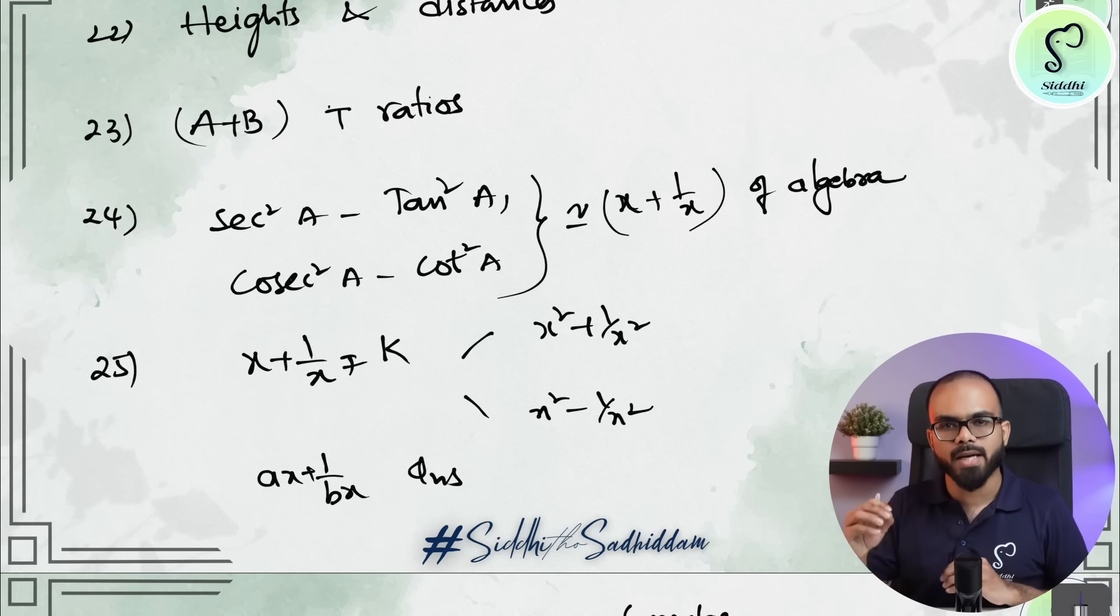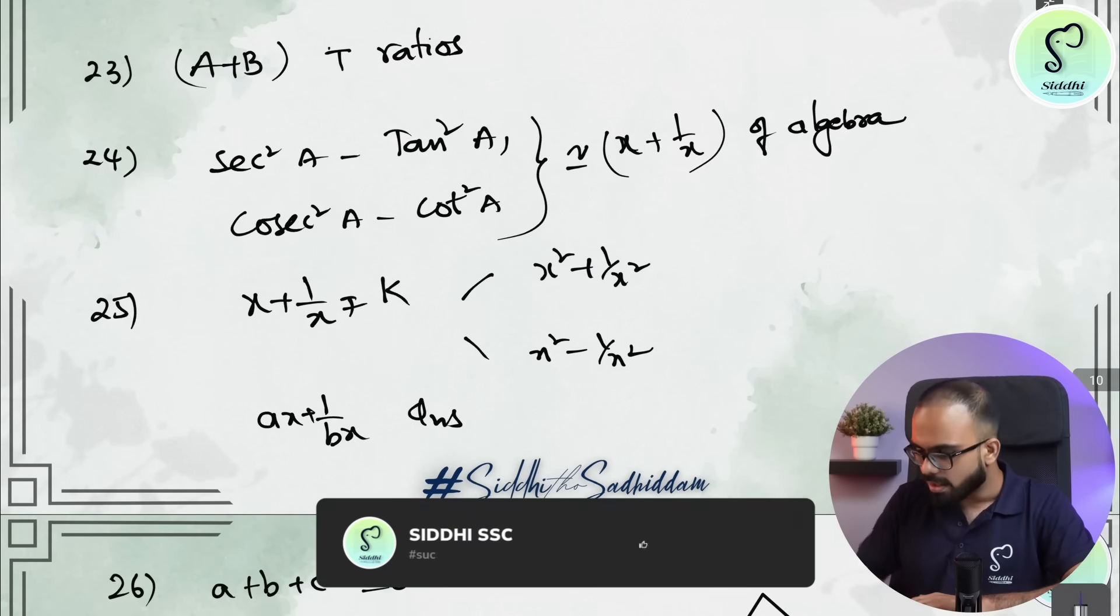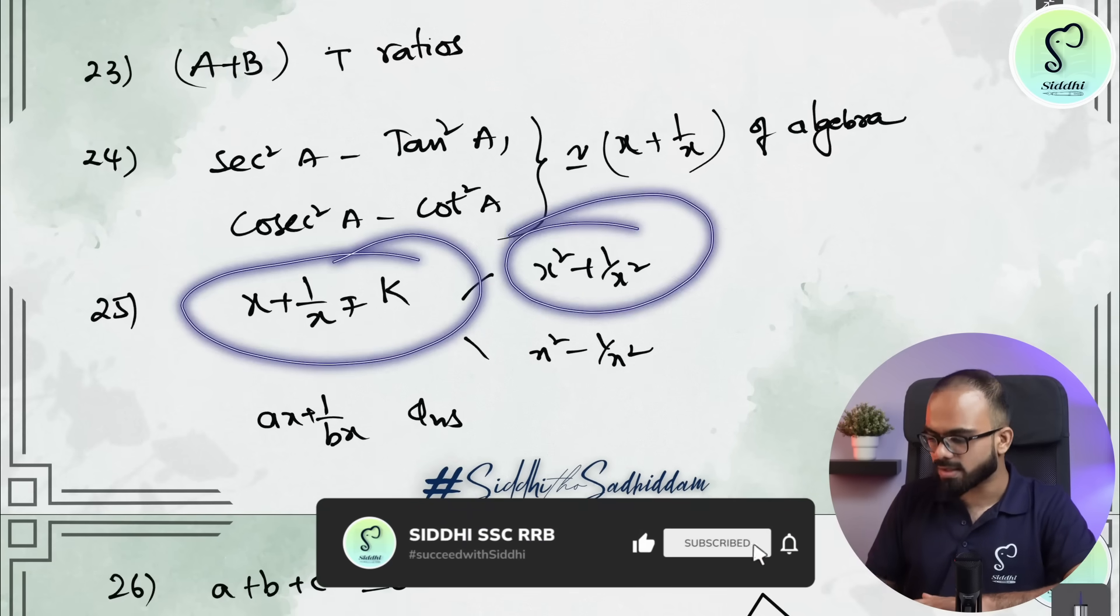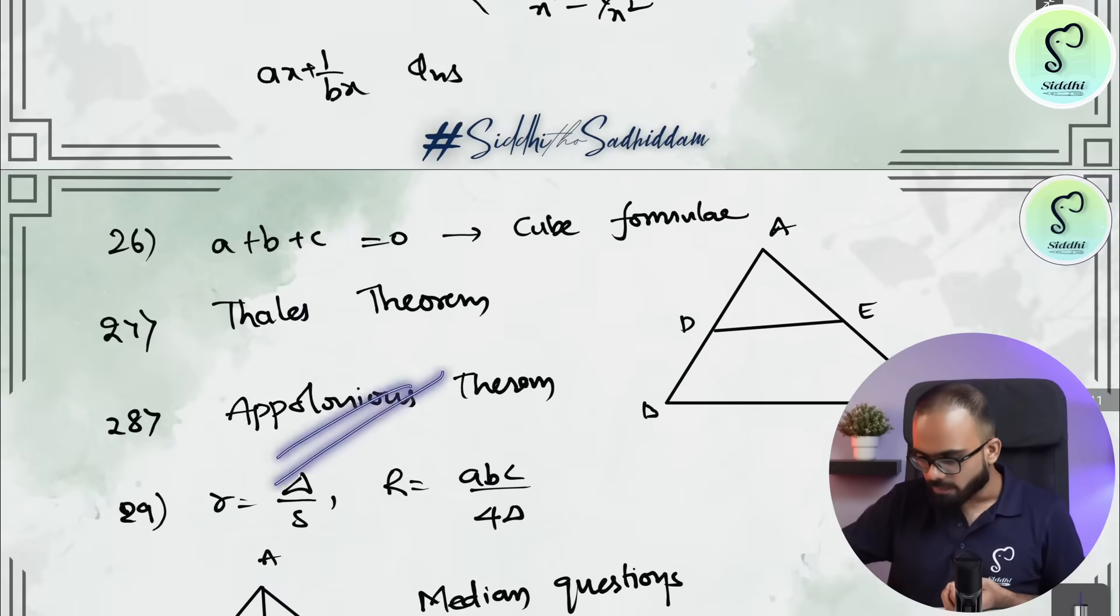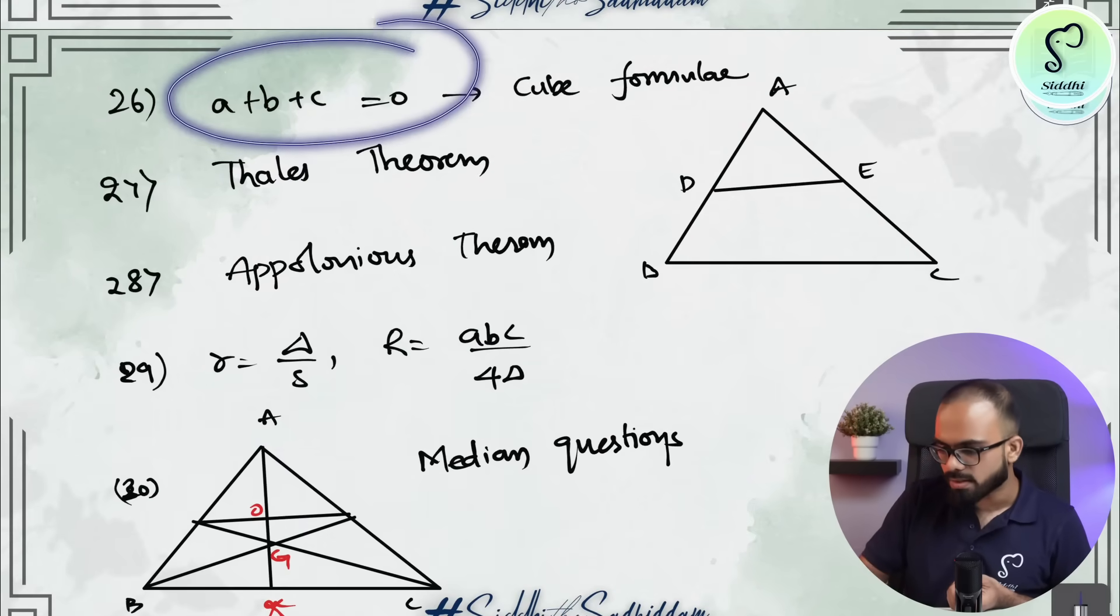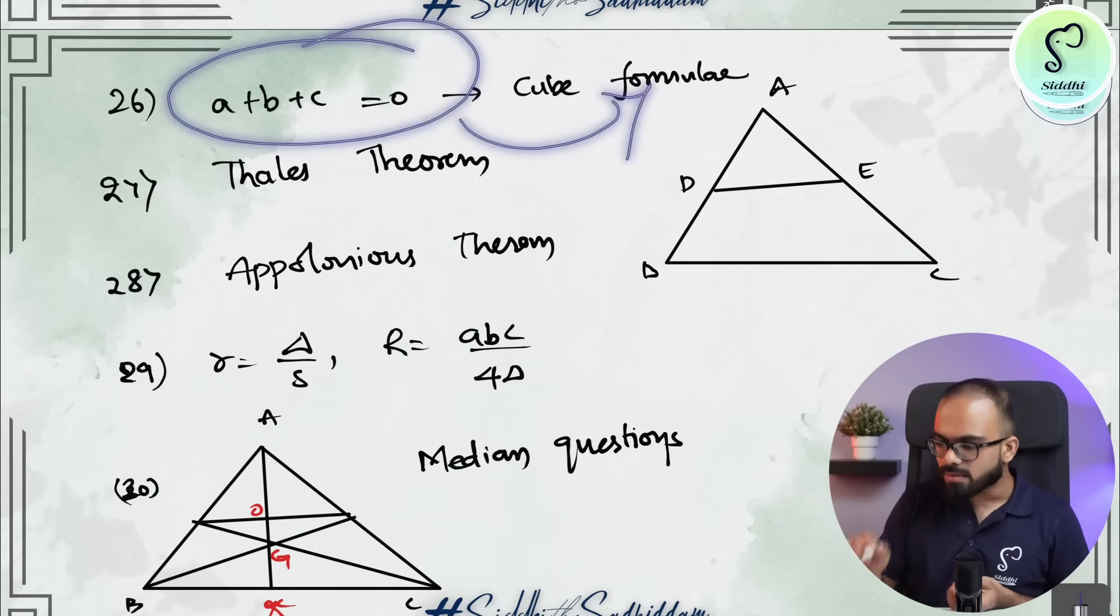These kind of questions can be applied in algebra as well. So those questions and in algebra X plus one by X is equal to K. What is X square plus one by X square or X square minus one by X square or the questions of a higher order or similar questions on AX plus one by BX, etc. And the questions where A plus B plus C is equal to zero is given.